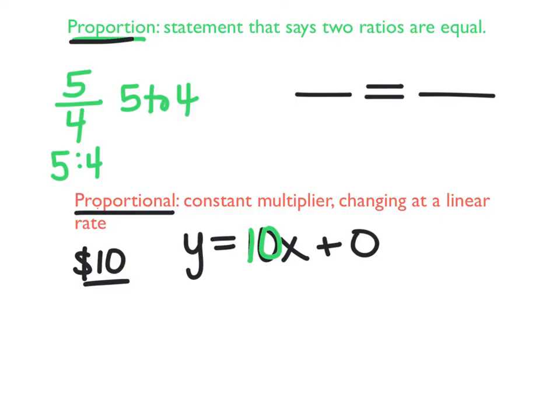So last year in seventh grade, we learned that if you have similar figures, their sides are going to be proportional, the ratio of their sides. So maybe I say that this one is 10 and this is 5 and this is 8 and this is 4.